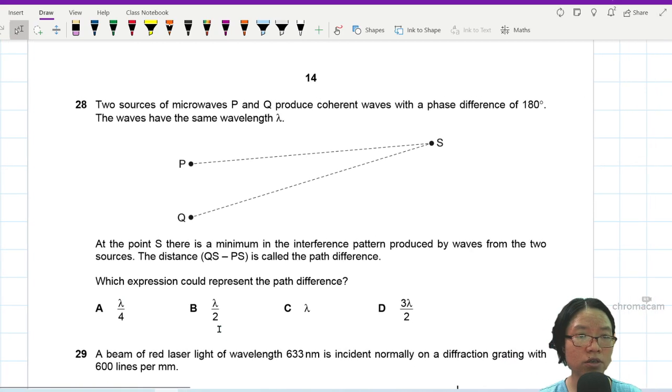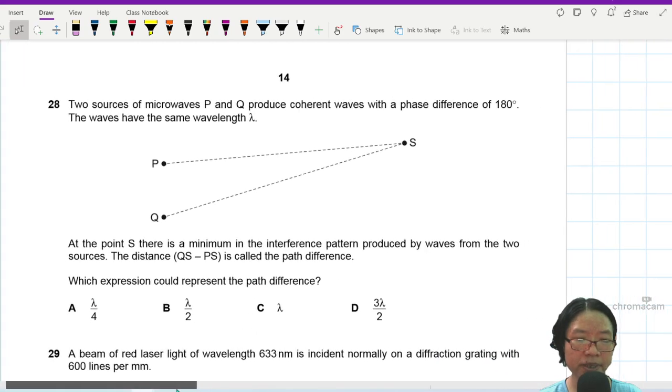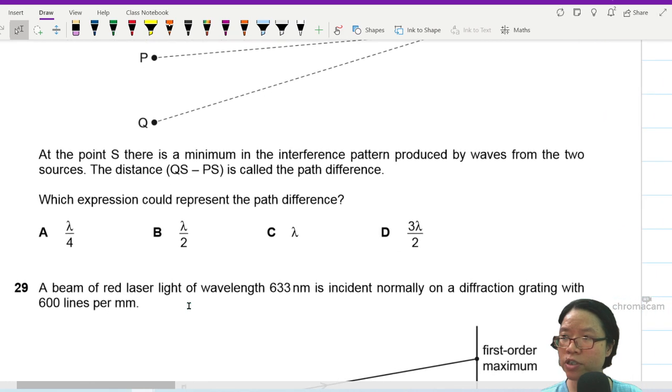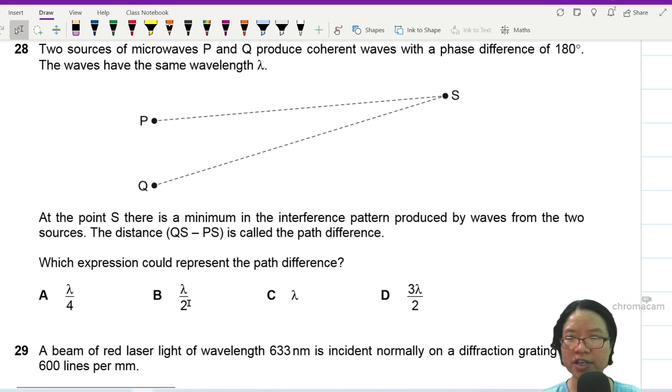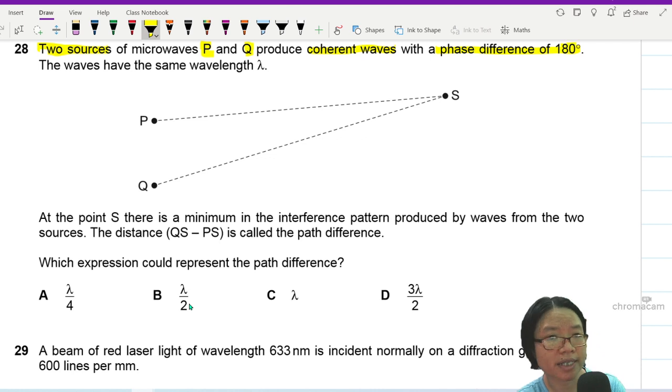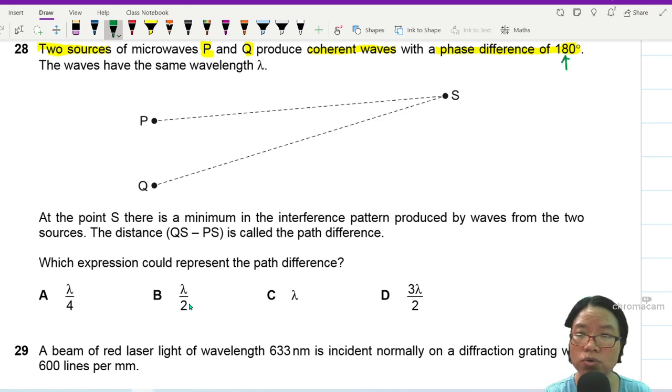Question 28. Two sources of microwave P and Q produce coherent waves with a phase difference of 180 degrees. So we have two sources of microwaves P and Q, and there is coherent wave so I expect some form of interference happening here with a phase difference of 180. That means before they even start they already have a phase difference. This phase difference is at the source.